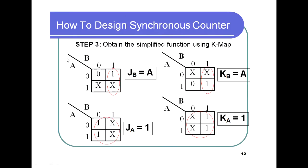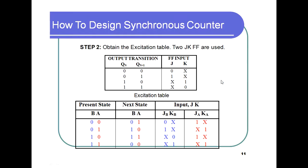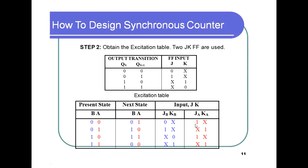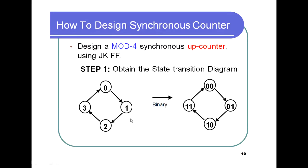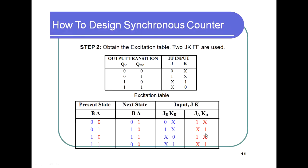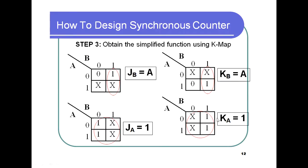From the Karnaugh map, JB simplifies directly to A, and KB also simplifies to A. For JA, all entries are 1 or X, giving JA = 1. For KA, entries are X, 1, X, 1, giving KA = 1. So the results are: JB = A, KB = A, JA = 1, KA = 1.